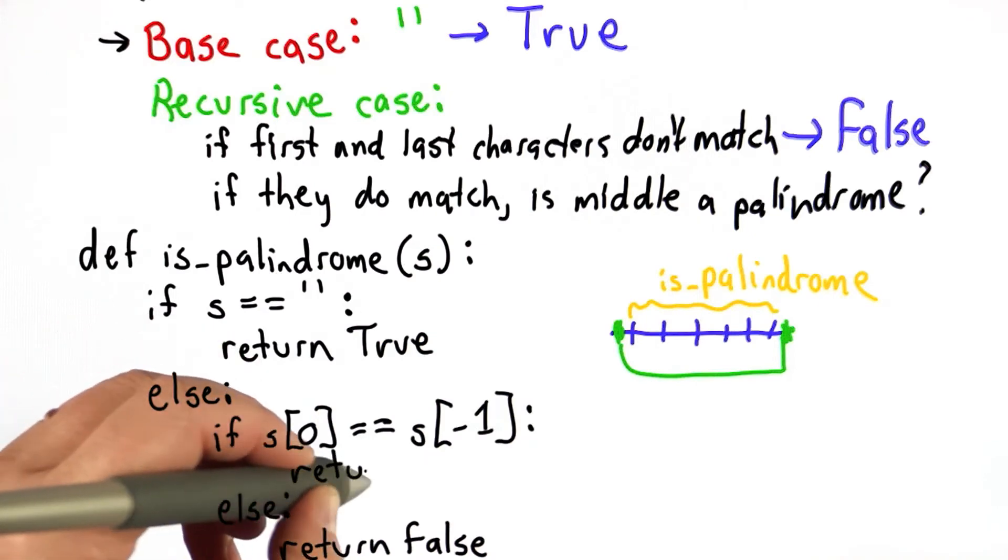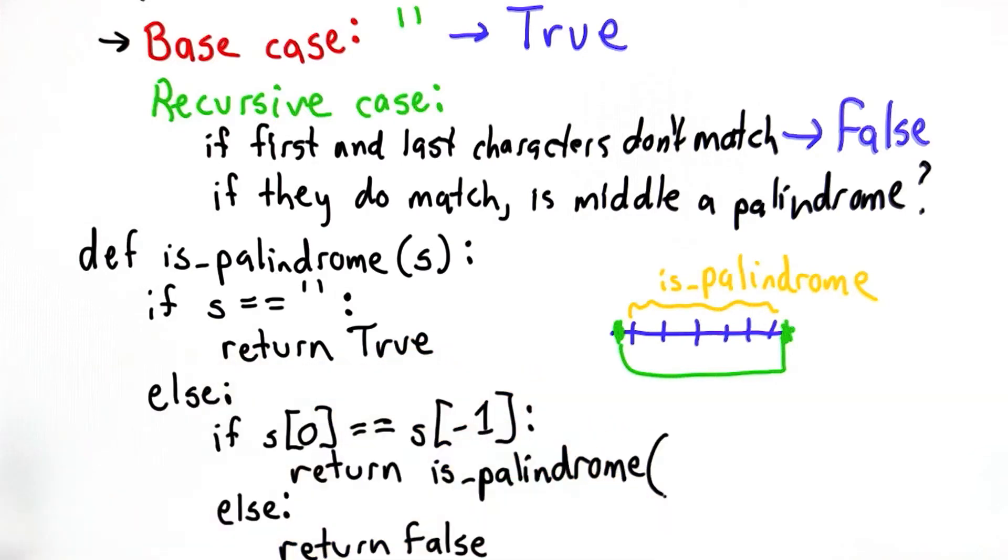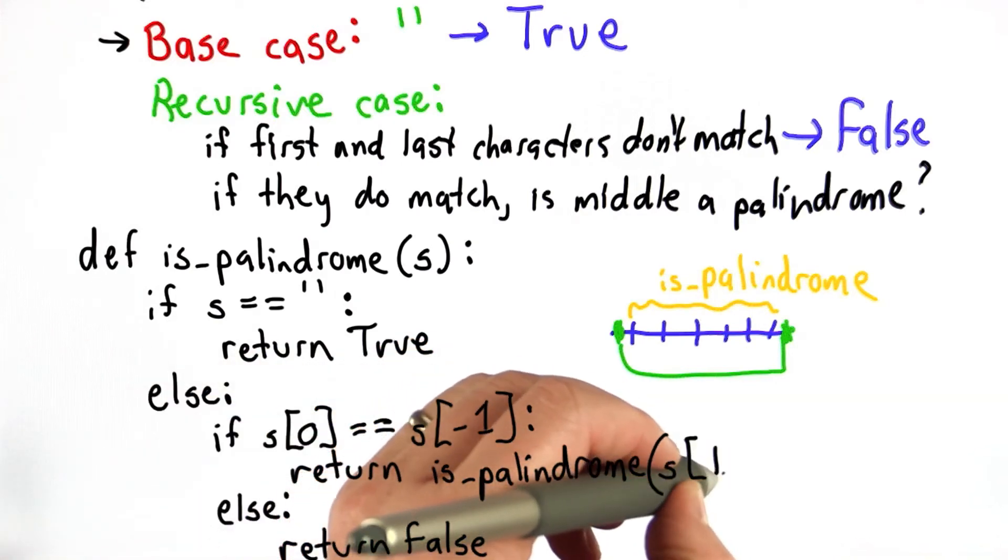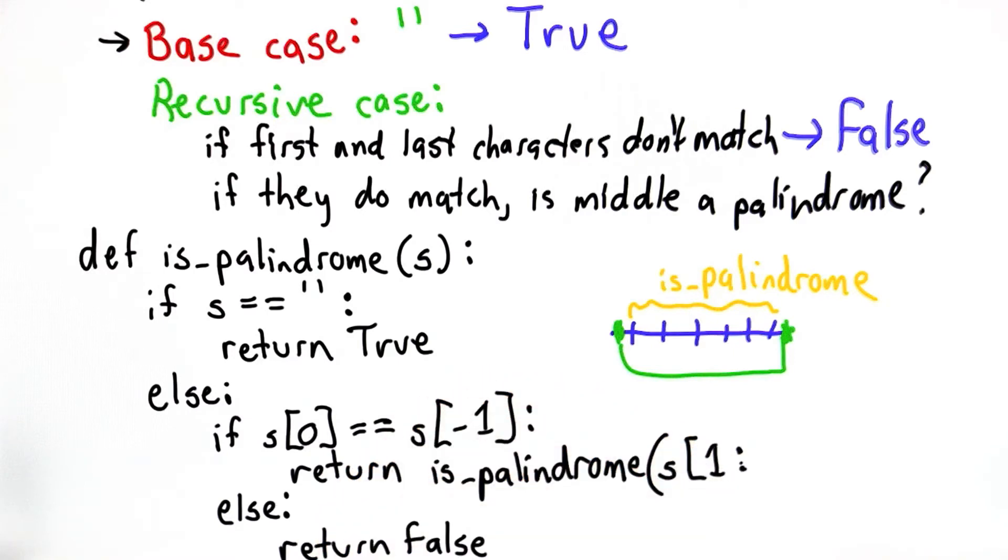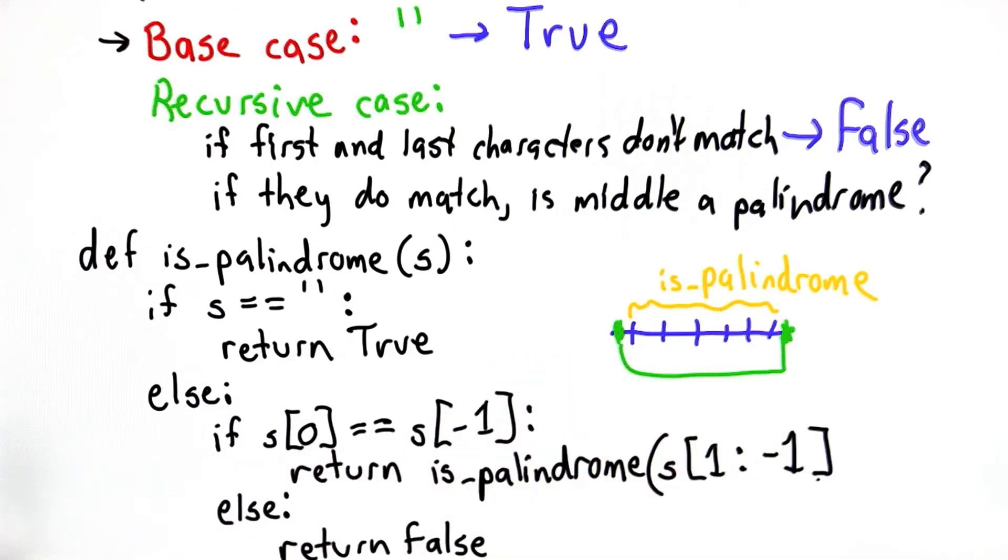We're going to return the result of calling is_palindrome. But instead of passing in s, what we want to do is pass in the string starting from position 1 of s, so removing the first character, and ending at position negative 1, removing the last character.